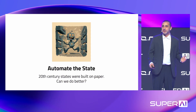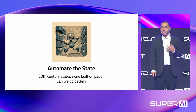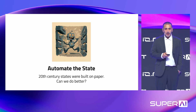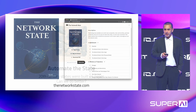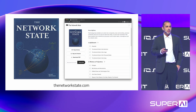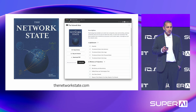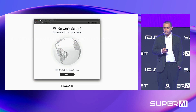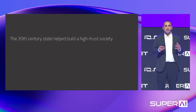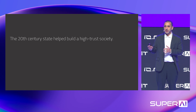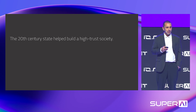I'm going to talk today about automating the state. The 20th century state was built on paper — can we do better? Some of these ideas were prefigured in the Network State book, version 1.0 is out and we're working on version 2. We're also talking about some of this stuff at Network School, which is at ns.com. The first half will be motivation, then the second half will talk about the AI part.